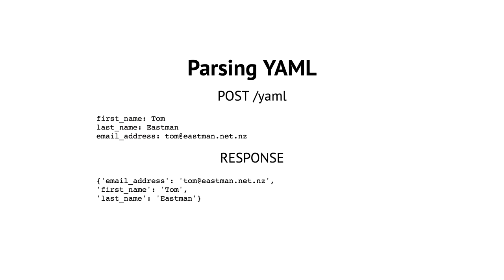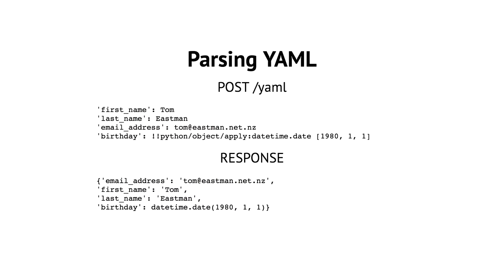Let's talk about YAML. In YAML, if I post my first name is Tom, my last name is Eastman, and I have an email address, I get back a JSON result with my email address, first name, and last name. What I can also do in YAML is I can post Python objects. What I can do here is post back a Python object to datetime.date with my birthday, and I get back a Python datetime object. Who can see where this is going?